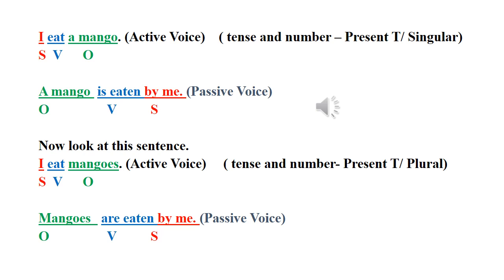Now we are going to turn the active voice sentences into passive voice sentence. Let's look at the example. I eat a mango. This is an active voice sentence. I, subject. Eat, verb. A mango, object. Before we turn this sentence into passive voice, we have to think about the tense and the number of this sentence.